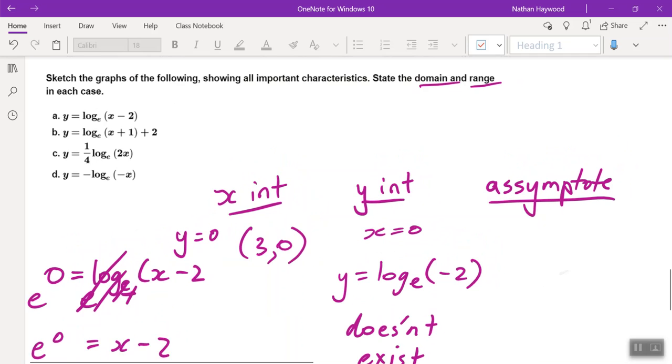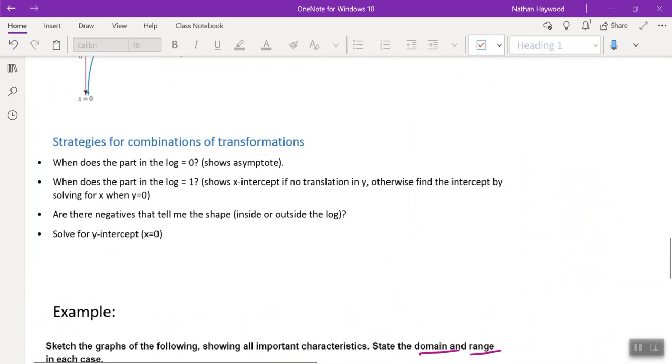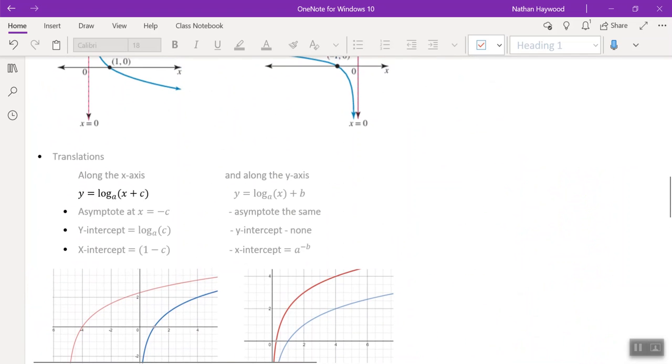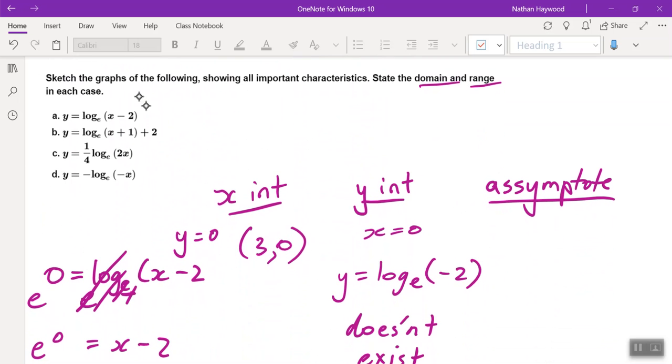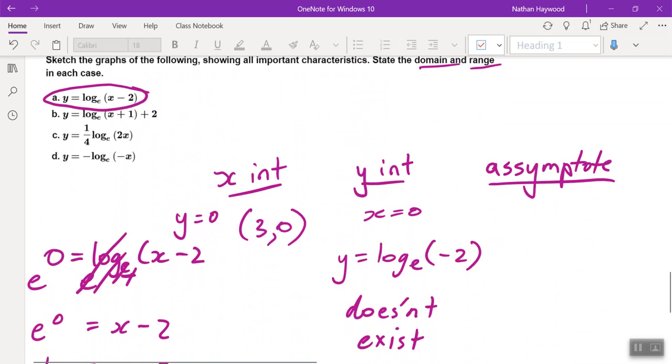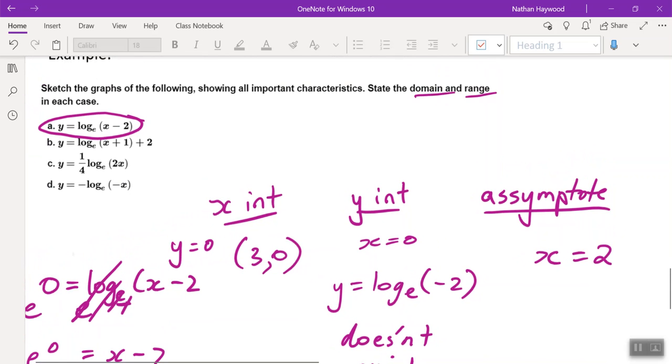Last one is the asymptote. So when does the asymptote occur? We can just use this cheat if you would like. x equals negative c. What's the c value in this equation? Negative two. So x equals positive two. Negative c. The c is negative, so it becomes positive. Does that make sense?